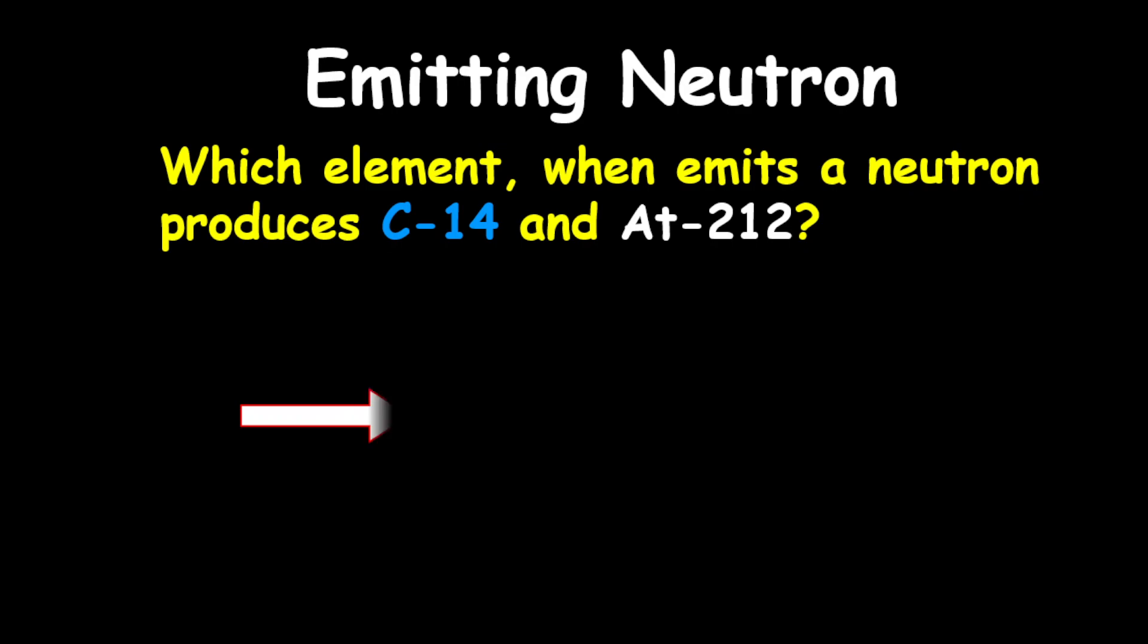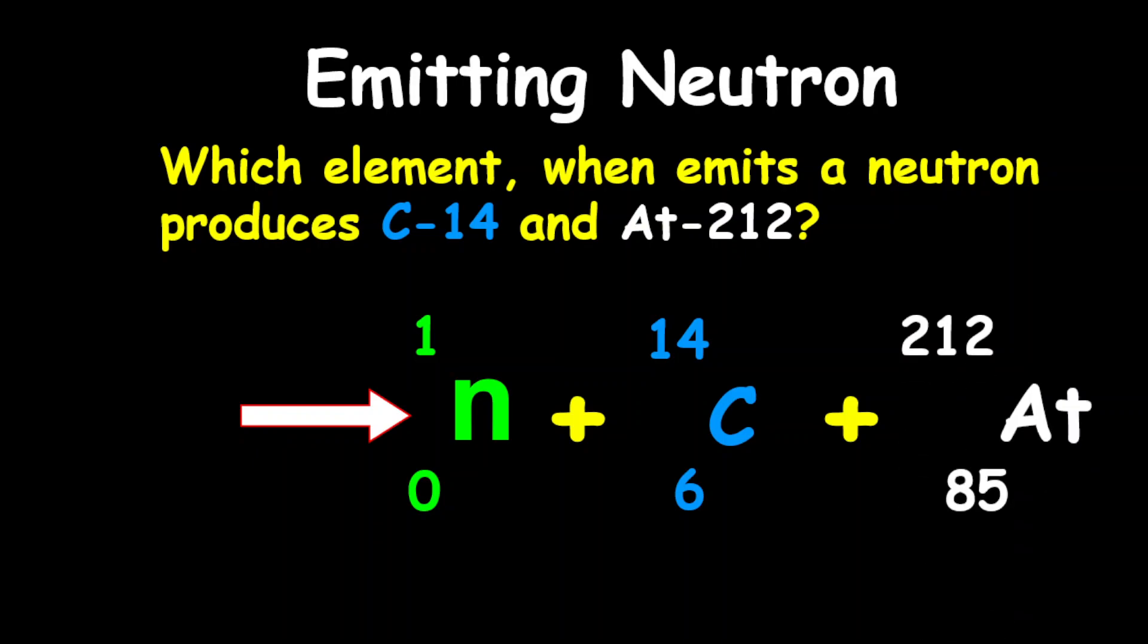Now, astatine, carbon, and the neutron, they are products. So our neutron is represented, carbon-14 with a proton number of 6, and also astatine with a proton number of 85. Now, the element that was used to form these products, what you're going to do is to first find the mass by adding all the masses on the product side. So as a result,